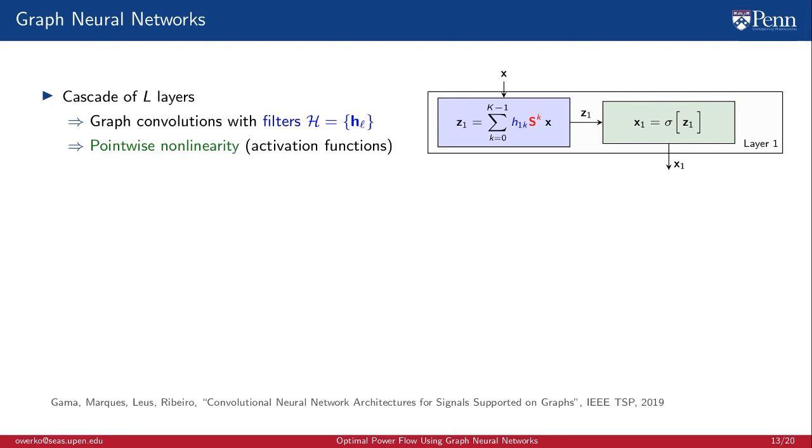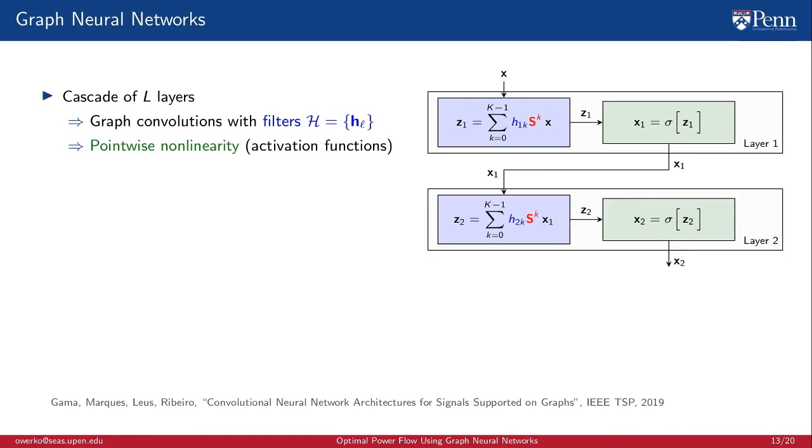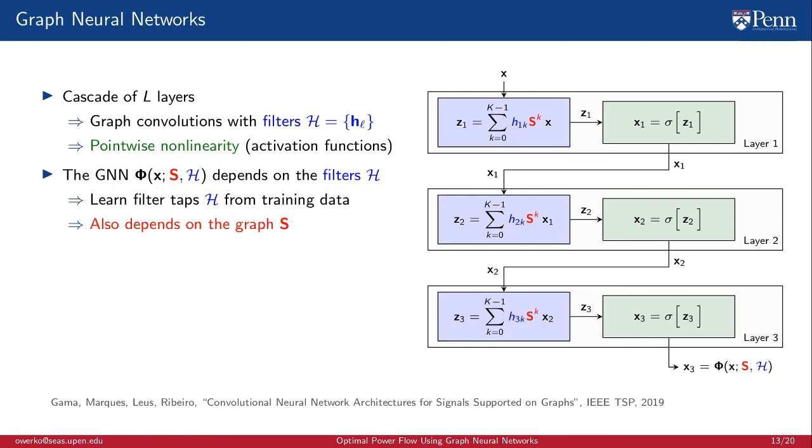Equipped with the operation of graph convolution, we can define graph neural networks. GNNs are a cascade of layers, each of which applies a graph convolution followed by a point-wise nonlinearity. So the signal goes in, gets filtered by this graph filter H1 over here with these specific filter taps, and then it is fed into a nonlinearity. The output of this layer acts as the input to the next layer, where it is applied to another graph filter with different filter taps H2, another nonlinearity, yielding an output that then is fed into the next layer, and so on.